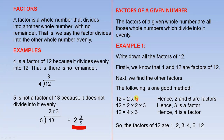12 equals 2 times 6, hence 2 and 6 are factors. 12 can also be written as 2 times 2 times 3. That 2 is the same as the first 2, and that 6 is just 2 times 3. This helps us find 3 as a factor.